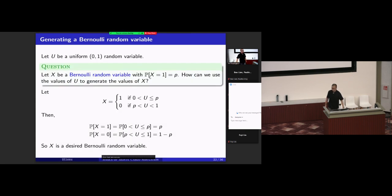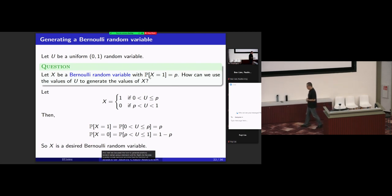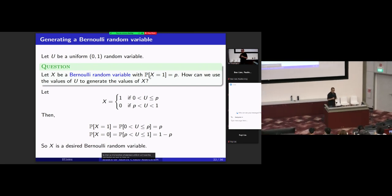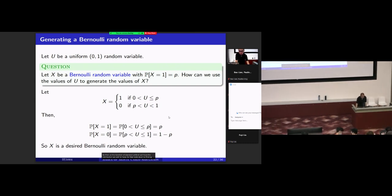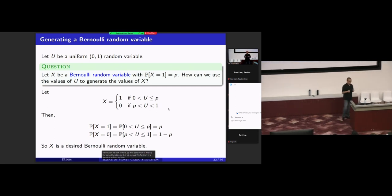Next, we discussed how to generate an arbitrary random variable using a standard uniform. The idea is that the function of a random variable is still a random variable. So we design a function such that applying it to a standard uniform gives us the distribution we wish to have.